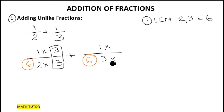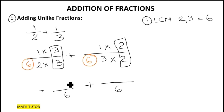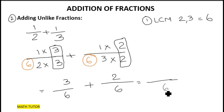We repeat the same process for the second fraction: what number do I multiply three by to get six? I multiply by two, and I have to multiply the numerator by two as well. Now the new denominator is six for both fractions: two times three equals six, and one times three is three; three times two is six, and one times two is two. We have turned the unlike fractions into like fractions. Keep the denominator as it is and just add the numerators: three plus two equals five-sixths.